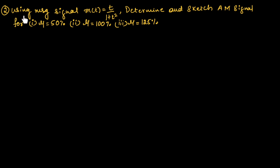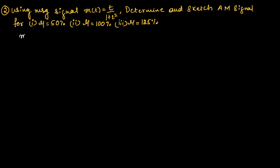Here, using message signal m(t) = t / (1 + t²), we need to determine and sketch the AM signal for modulation index 50%, modulation index 100%, and modulation index 125%. The message signal is given as m(t) = t / (1 + t²).